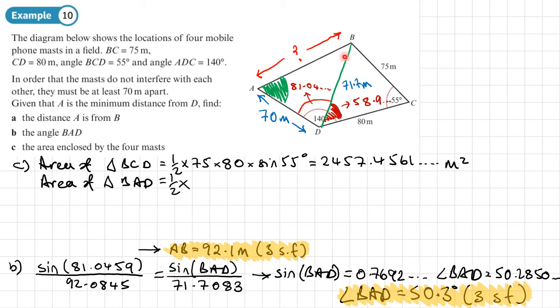Then we're going to work out the area of this triangle here, so that's area of triangle BAD. So again that'd be half, now we're going to use these two sides. I could use these two, I'm going to use these two here. So half 70 times 71.7 - now that was to four decimal places, so 71.7083 - times the sine of the angle between those two, which is this one, which was 81.04, which is to four decimal places, so sine 81.04, which gives 2479.2045 meters squared.